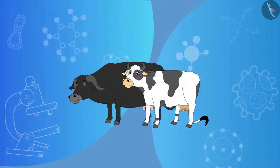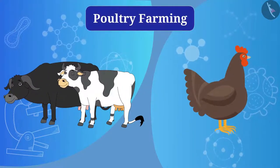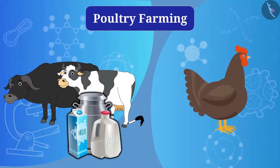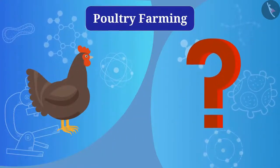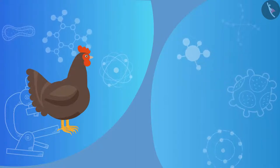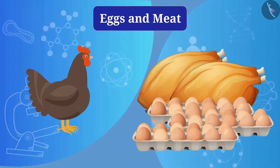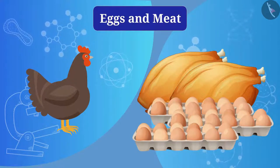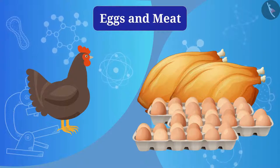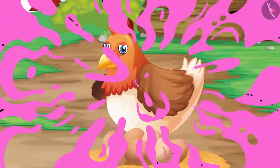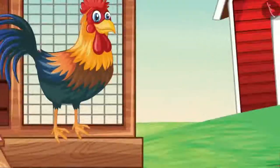Now let's understand poultry farming. We get milk from cows and buffaloes, but from chickens we get eggs and meat. To increase the amount of eggs and meat, chickens should be taken care of — and this is called poultry farming. The egg-laying hen is called a layer, and the meat-giving hen is called a broiler.